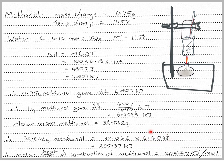Since 6.4093 is the energy from 1 gram, we multiply by 32 to get the energy for 32 grams, which equals 205.37 kilojoules. Therefore, the molar heat of combustion of methanol equals 205.37 kilojoules per mole.